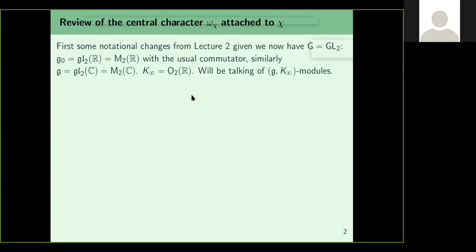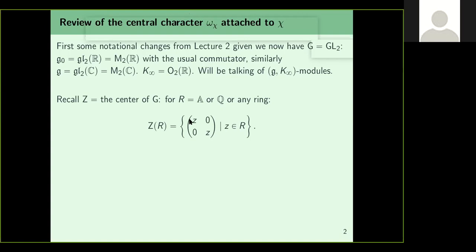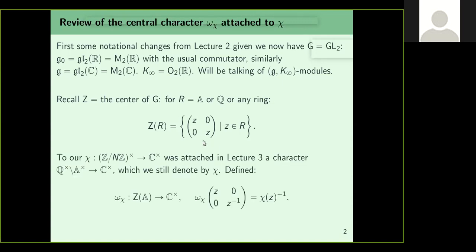Let us recall some notational changes. Now G is GL2. Henceforth, G₀ will be GL2(R), the Lie algebra G will be GL2(C) which is M2(C). Earlier K was the compact subgroup SO2(R) in SL2(R). Now K∞ is going to be the maximal compact subgroup O2(R) of GL2(R). With this G and K∞, we will talk about (G, K∞)-modules. We defined Z to be the center of G, namely the set of all scalar matrices.